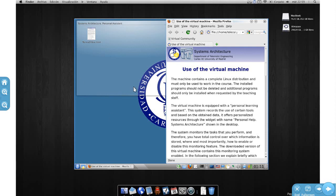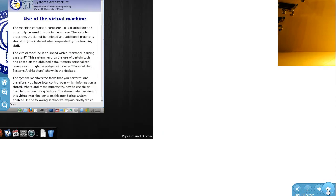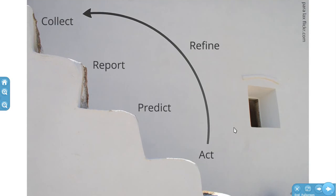With the collection of events we obtain with these techniques, we can put into practice what is called the five steps of learning analytics. We collect the events, report the results, use them to make predictions, act on those predictions, and then the overall process is refined.